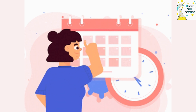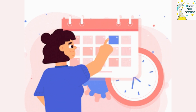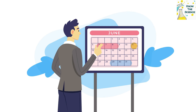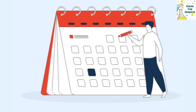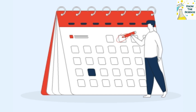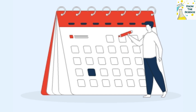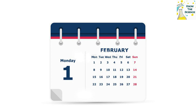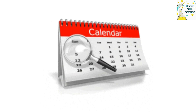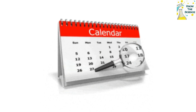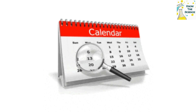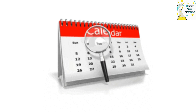Each month in the modern Gregorian calendar consists of at least 28 days — that number would be a nicely rounded 30 were it not for February. While every month besides the second contains at least 30 days, February falls short with 28, and 29 on a leap year. So why is the most widely used calendar in the world so inconsistent in the lengths of its months, and why is February stuck with the fewest number of days?